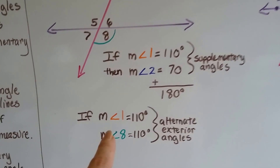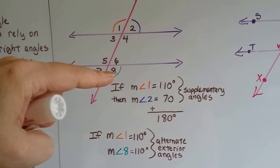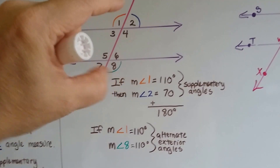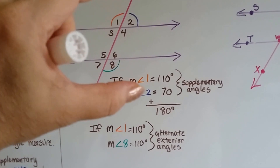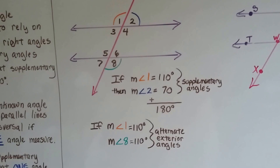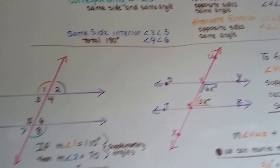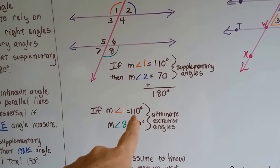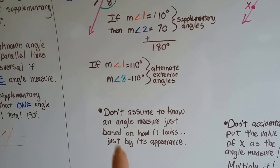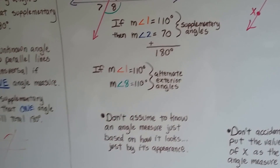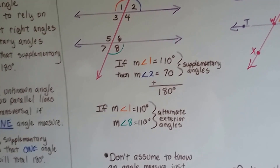What if the measure of angle one is 110 degrees and we're trying to find the measure of angle eight? Angles one and eight are alternate — on opposite sides of the transversal — and exterior, because they're on the outside of the parallel lines. Alternate exterior angles are on opposite sides of the transversal and they're congruent. So if the measure of angle one is 110 degrees, the measure of angle eight is 110 degrees. Don't assume an angle measure just based on how it looks — have something to back it up, like supplementary or alternate exterior angles.